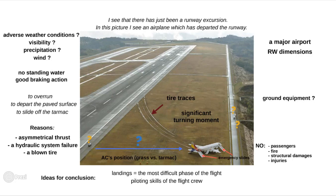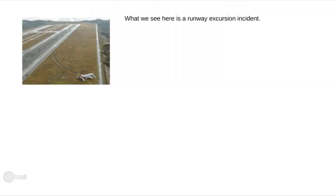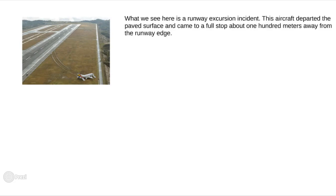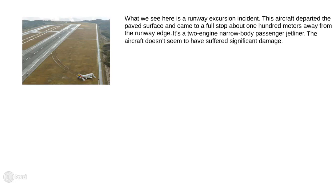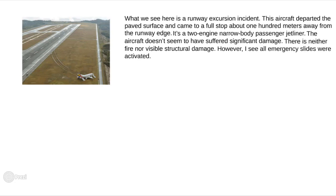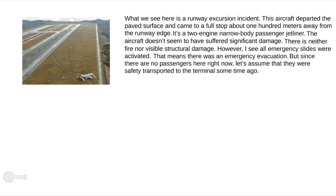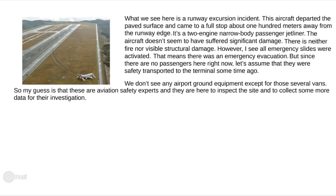Let's try to put it all together. What we see here is a runway excursion incident. This aircraft departed the paved surface and came to a full stop about 100 meters away from the runway edge. It's a two-engine, narrow-body passenger jetliner. The aircraft doesn't seem to have suffered significant damage — there is neither fire nor visible structural damage. However, I see all emergency slides were activated, meaning there was an emergency evacuation. Since there are no passengers here right now, let's assume they were safely transported to the terminal some time ago. We don't see any airport ground equipment except for those several vans, so my guess is that these are aviation safety experts here to inspect the site and collect data for their investigation.